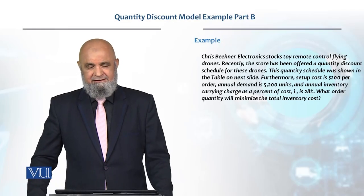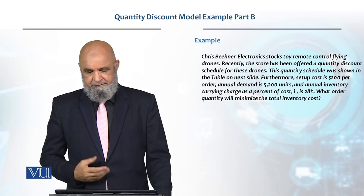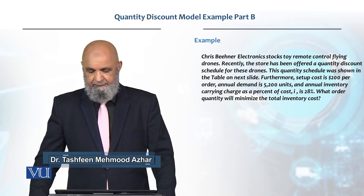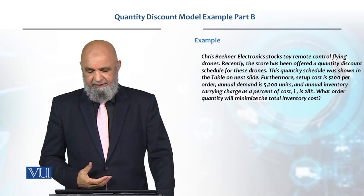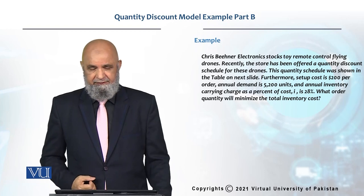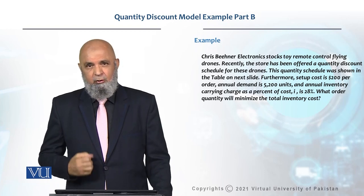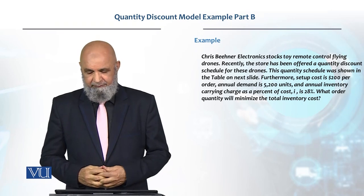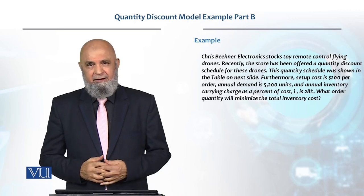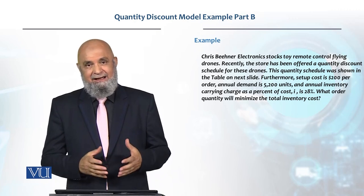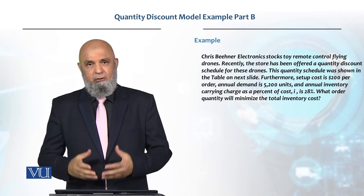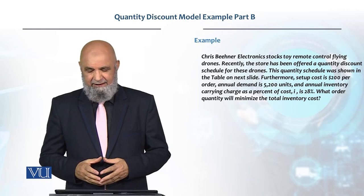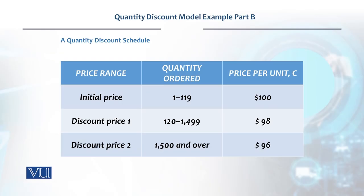Let's look at another example. Let's say there are flying drones with a purchase and setup cost of $200 per order, and an inventory holding cost that is 28% of unit price. We have to determine how to order to minimize total cost — we will include product cost also. Let's look at the discount schedule which we have been given.